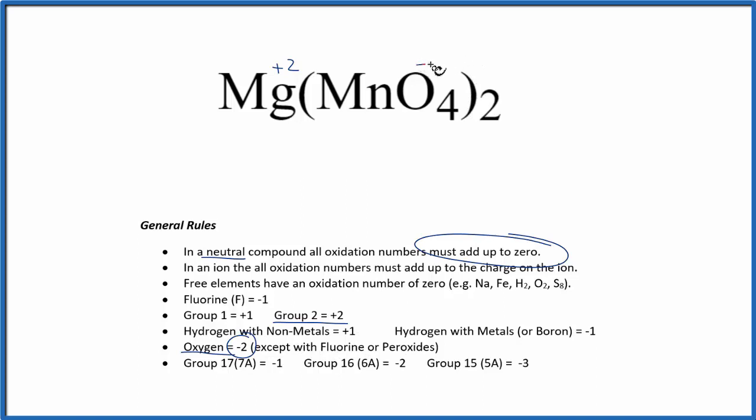So we'll put minus 2 here. That's for each one of these four oxygens. And we know everything adds up to zero. So let's call the manganese x, and then we'll set an equation up. We have 2 plus x, that's our manganese.